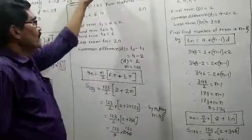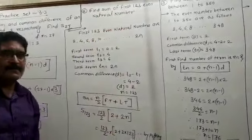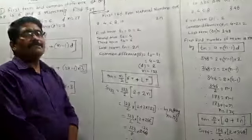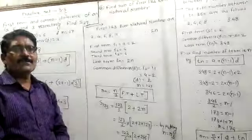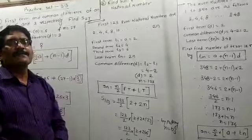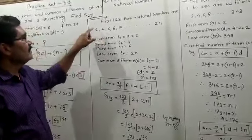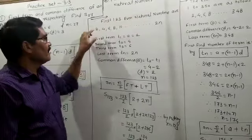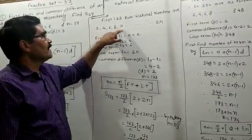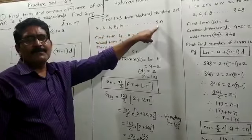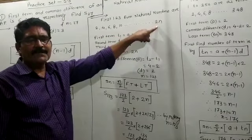Then, you have to move to the second question: find the sum of the first 123 even natural numbers. In the short example, we already saw that if the last even natural number is 2N. So the first 123 even natural numbers are 2, 4, 6, 8, 10, and so on, with the last term being 2N.